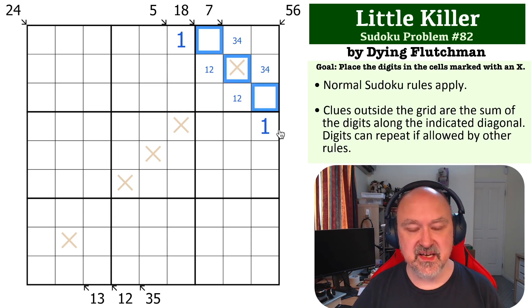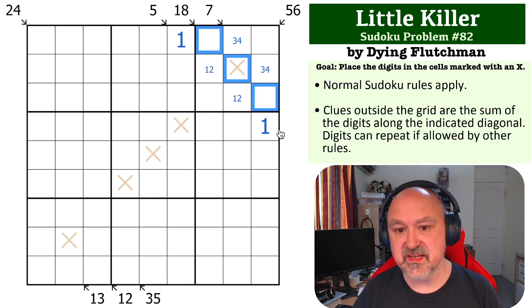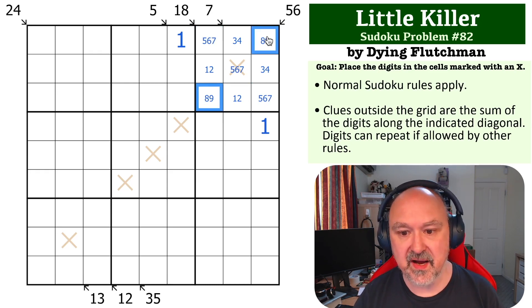Now we need to make up 18, but the minimum digits we have available are 5, 6, and 7. Five and six is 11, add 7 you get to 18. So these are 5, 6, and 7, and these become 8 and 9, and that becomes completely forced.